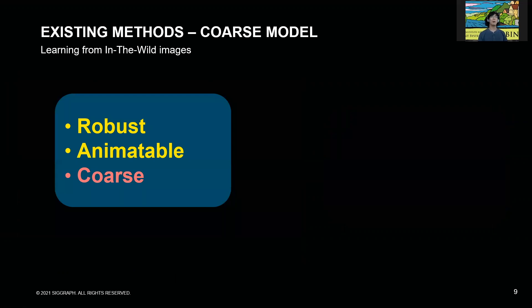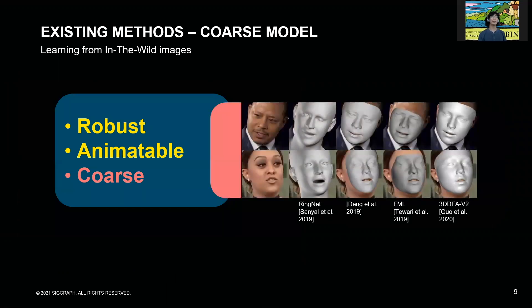These result in overly smooth reconstructions, which are unable to capture geometric details such as expression-dependent wrinkles, which are essential for realism and support analysis of human emotion. The advantage of using a 3DMM, however, is that these methods are robust to in-the-wild variations and are ready to be animated. But unlike DECA, they lack detailed wrinkles.